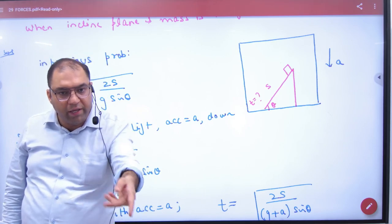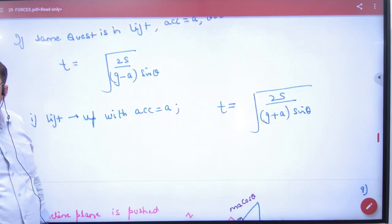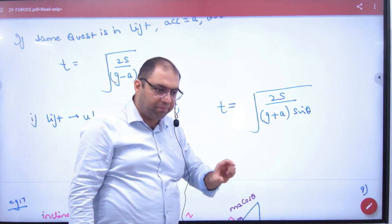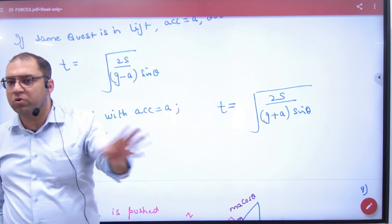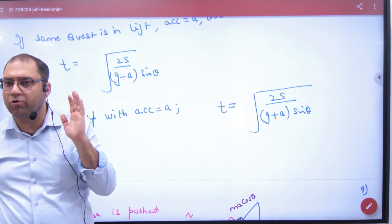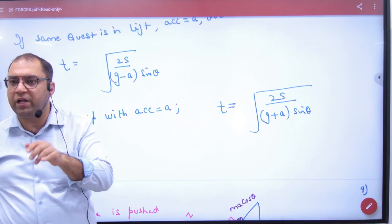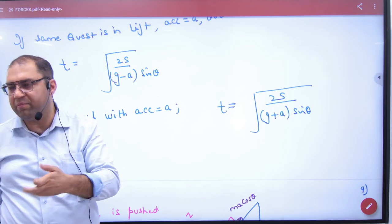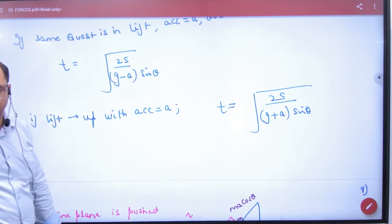And if this question is where the lift is going up with an acceleration of a, then you say g plus a. What is the right thing? Now any question comes where g is used, put that question in the lift. If the lift is accelerating upward, then it will be g plus a. And if downward, it will be g minus a. Is there any doubt? The method is clear here?